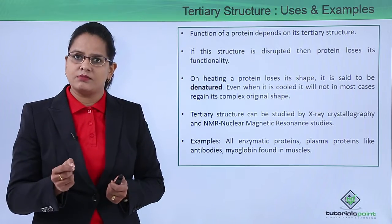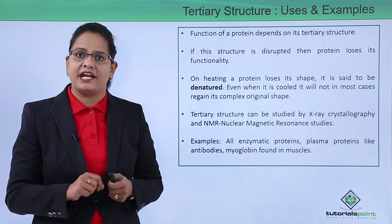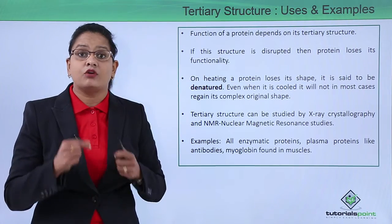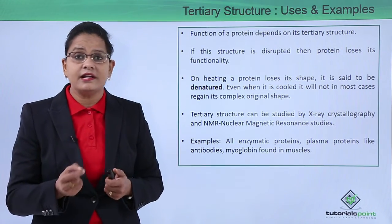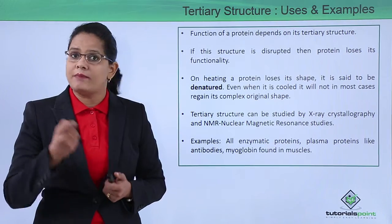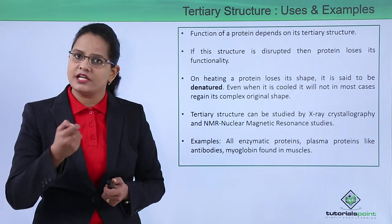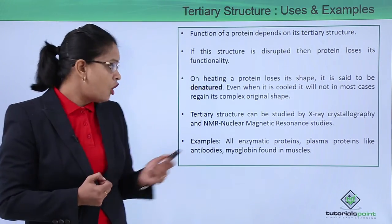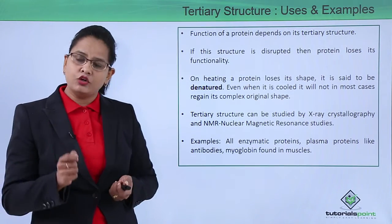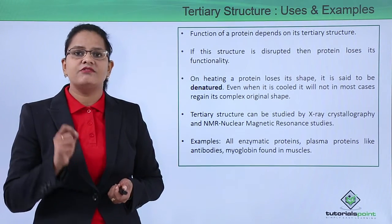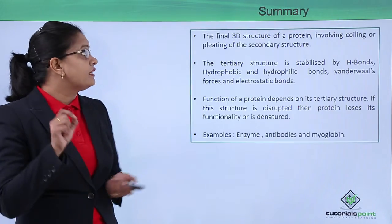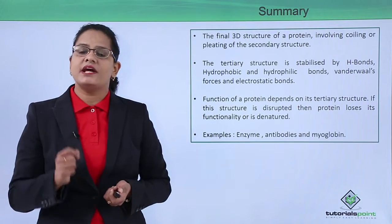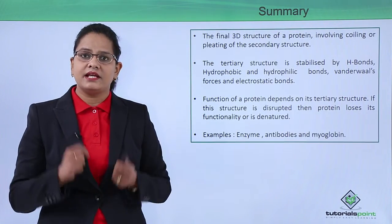All plasma proteins like antibodies are tertiary structures. If these antibodies are heated, they cannot bind to the antigen and act on it. Also, myoglobin, the protein found in the muscles, is another example of a tertiary structure.